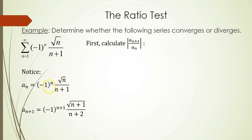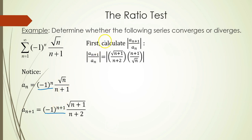We'll calculate the ratio with an absolute value. When you take the absolute value of quantities with negative 1's raised to powers, absolute value kills the negativity, so I'm going to exclude those negative 1 terms as I write out this ratio. That gives me square root of n plus 1 over n plus 2, and I'm dividing by a sub n, so I multiply by its reciprocal, giving me n plus 1 over the square root of n.